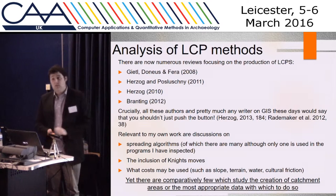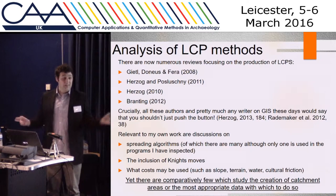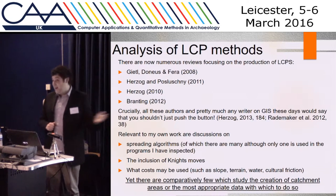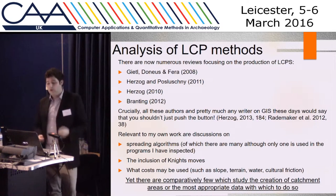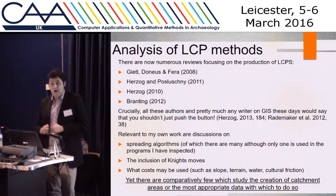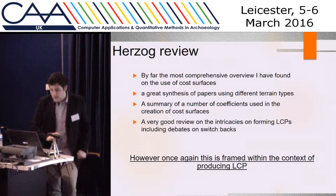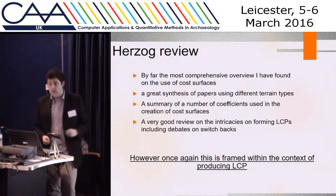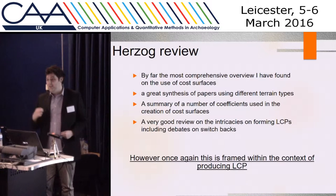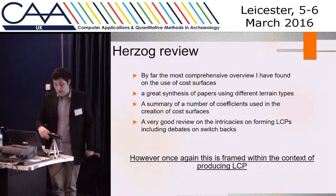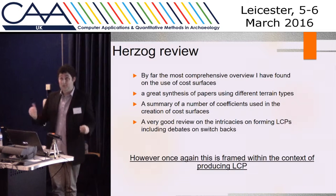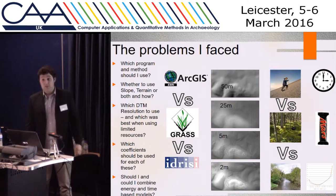When I first started my PhD, I looked into reviews about cost surfaces and found loads citing least cost path methods — for example, comparing Tobler versus Naismith algorithms — but none went into much detail about how they affected the creation of cost surfaces. Some information was useful, such as spreading algorithms and different ways to map friction. The most useful review I found was by Merle Herzog in Internet Archaeology, which is probably the most comprehensive review talking about their creation and all the different variables you can or shouldn't use. A lot of my work is built on that.